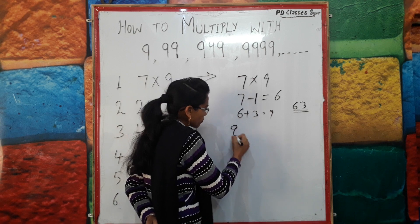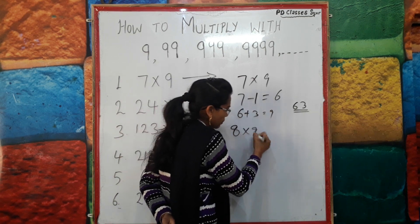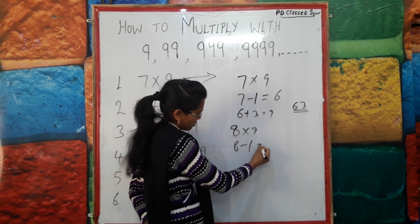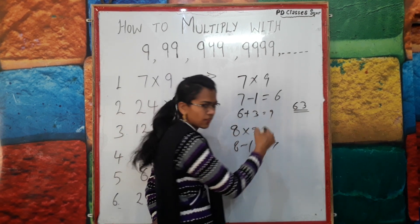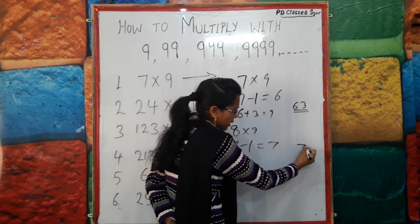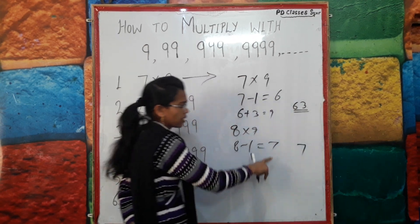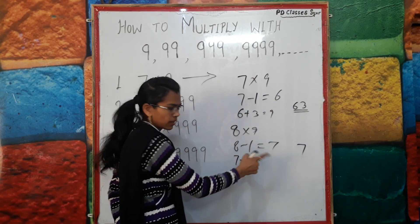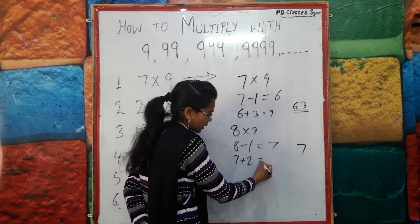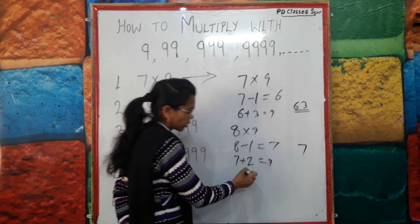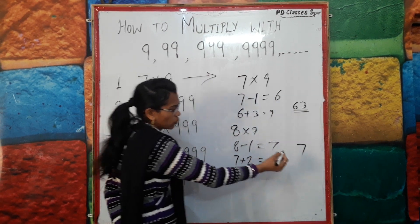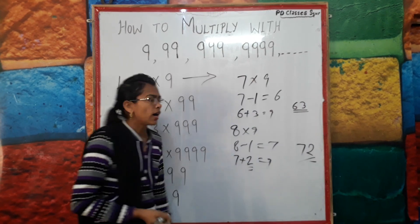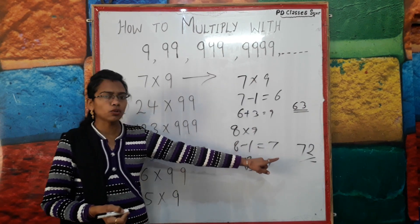Let us take a simple example: 8 multiplied by 9. Do 8 minus 1 equals 7 — that is the first digit. Now, what do we add to 7 to make 9? We add 2. So the second digit of the answer is 2. The answer is 72.